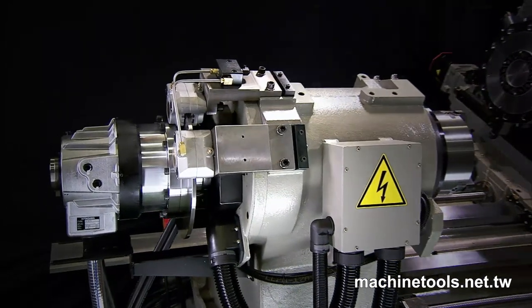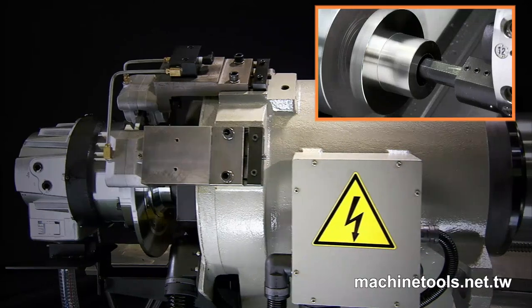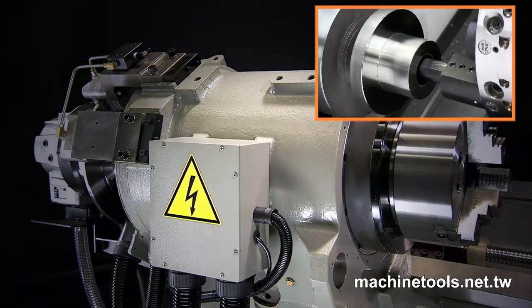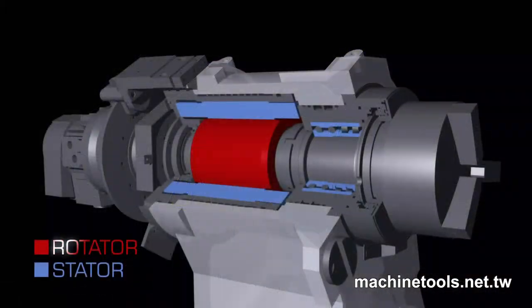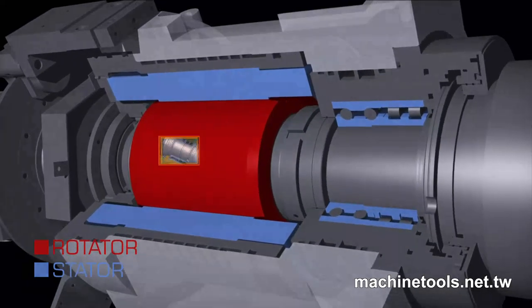The spindle motor is integrated inside the headstock to eliminate vibrations from belt or gear drives. This improves the spindle run-out and leads to greater surface finish and roundness. The integral unit has lower inertia than traditional drives to allow faster acceleration time and improve overall efficiency.